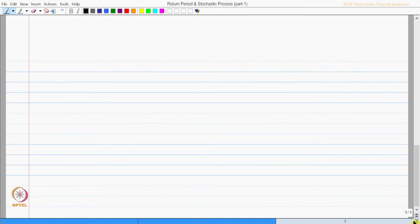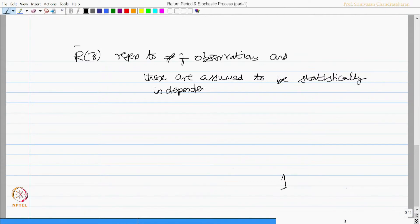Now, r bar of small z refers to the number of observations and these are assumed to be statistically independent. That is an important statement.